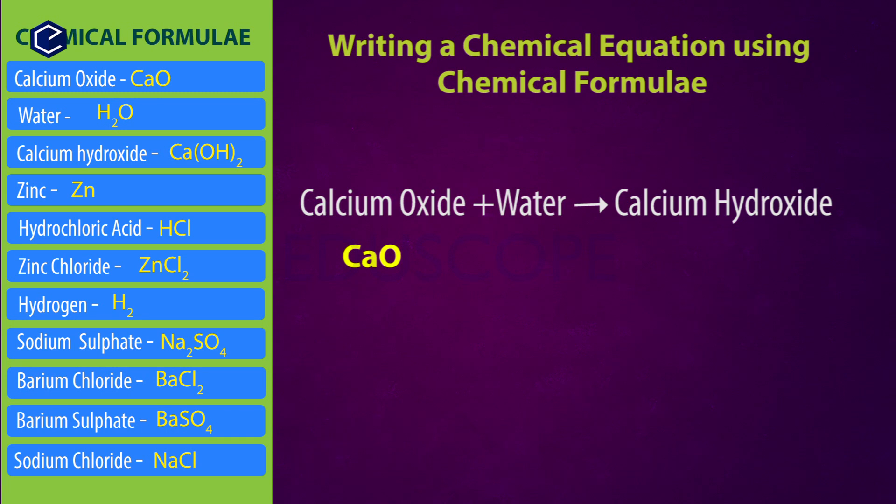So calcium oxide means CaO plus water. Water molecule's formula is H2O. So CaO plus H2O gives rise to calcium hydroxide. Calcium hydroxide chemical formula is Ca(OH)2. So this is the chemical equation with chemical formulas.